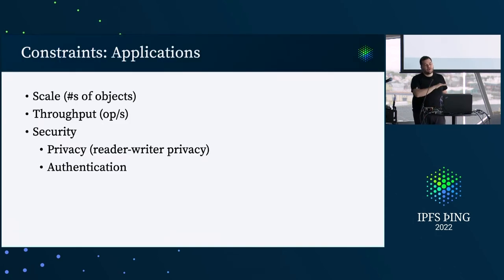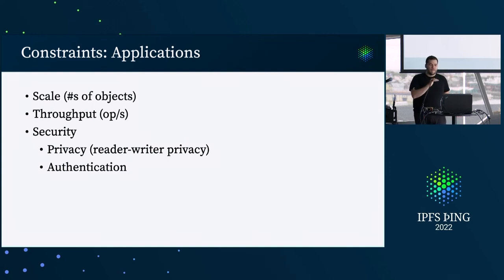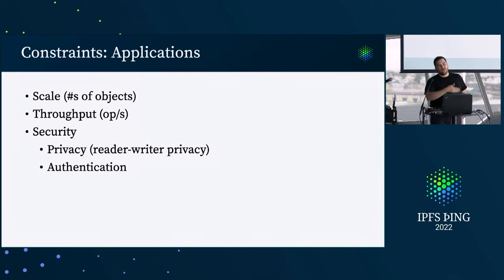For the most part today, most of the Web3 stuff does not do any reader/writer privacy and does not do any authentication, because it's either public or what's public and accessible is ciphertext. You then use a separate layer to do authentication. In many cases you don't have to deal with authentication in the content routing layer — you just can distribute all the ciphertext and do authentication in a separate step.